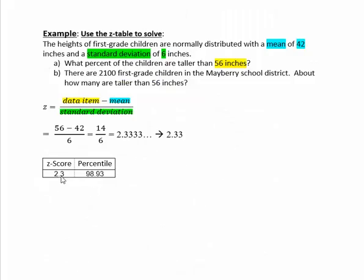So here's that line. 2.3 is the closest z-score to 2.33 and the percentile next to it was 98.93.